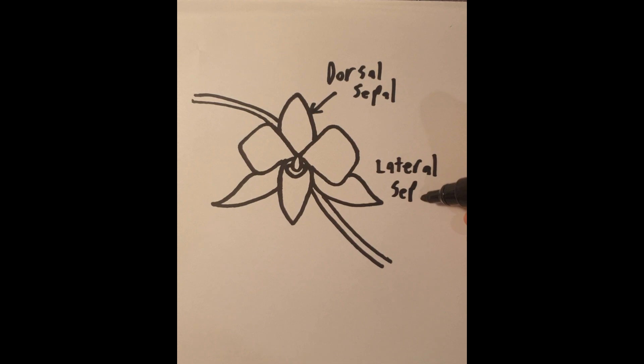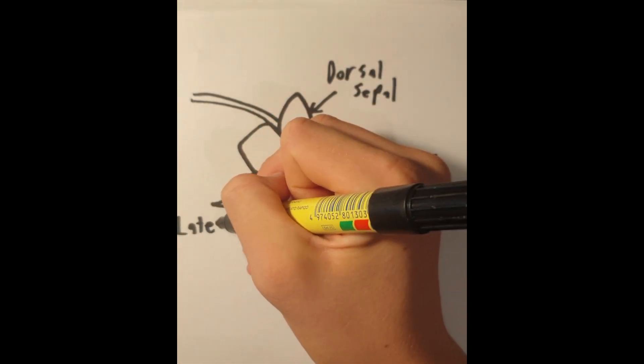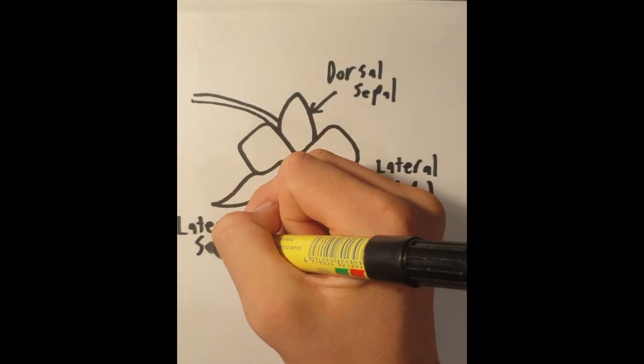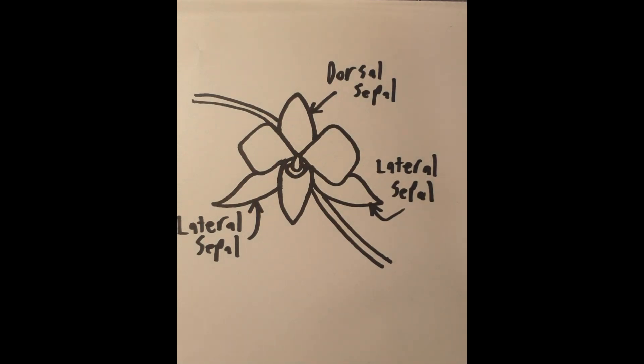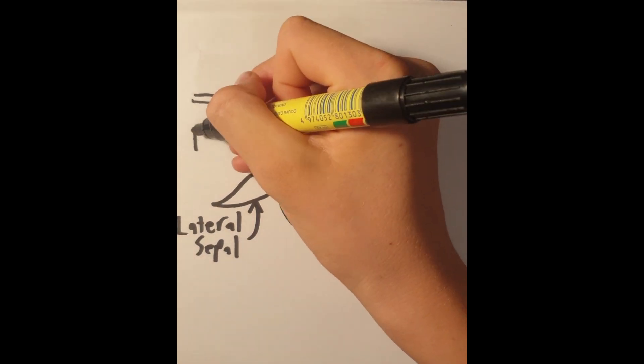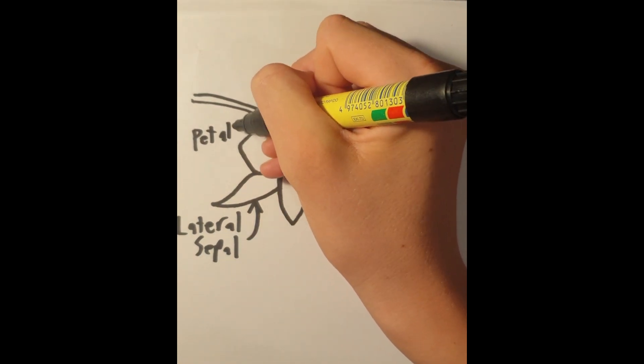The column and anther cap are the reproductive area of the flower. The orchid flower has the feminine and masculine organ of reproduction, fusing in only one body called a column, or gynostemium.